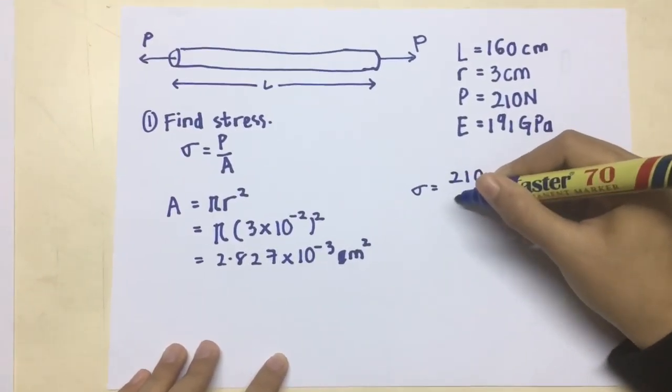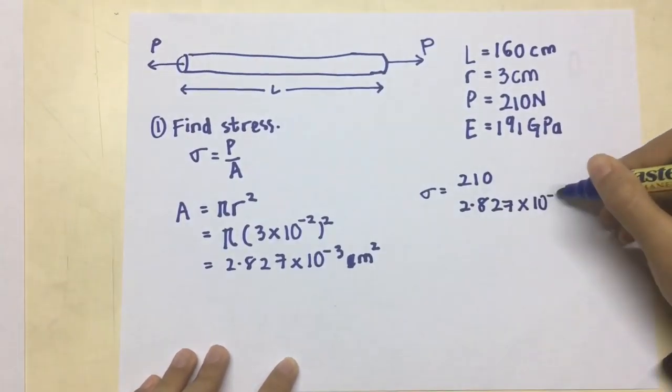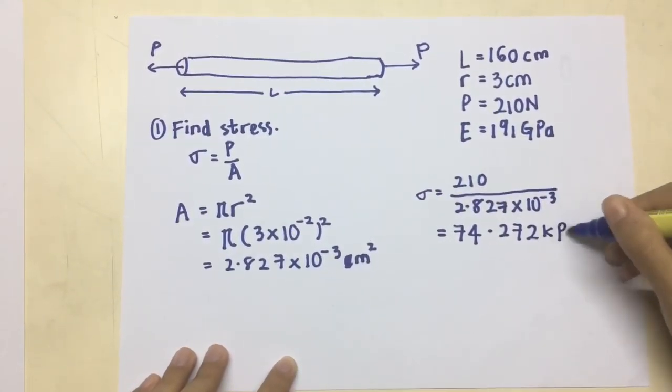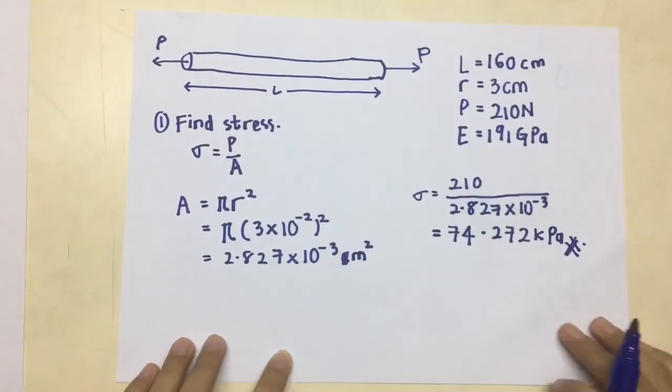Now, we have the values of the force and the area of the rod. So, we just substitute all that into the formula and we get 74.272 KPa.